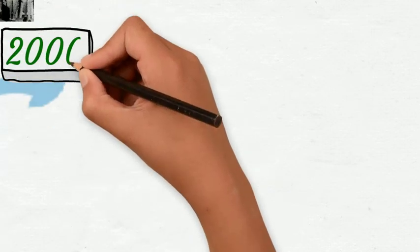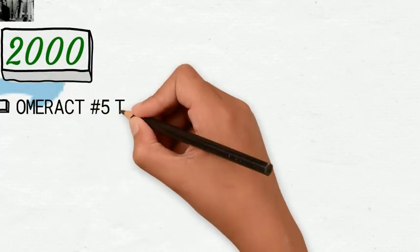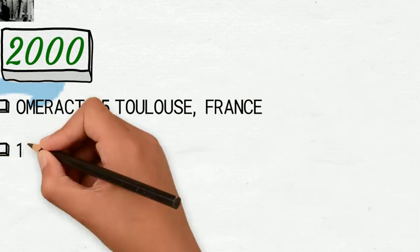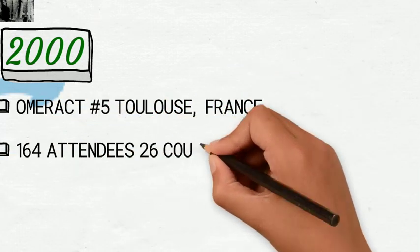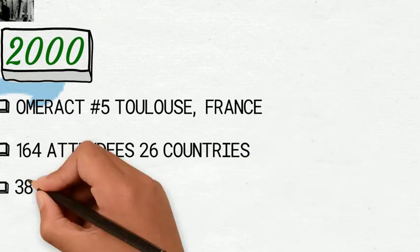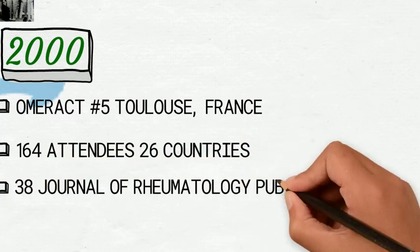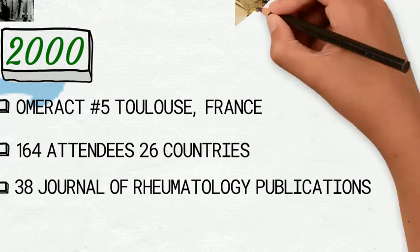In the year 2000, OMERACT held its fifth conference in Toulouse, France, and discussed definitions and methodologic classifications for minimal clinically important differences and initiated work to establish a core set of data for cost-effectiveness evaluations.